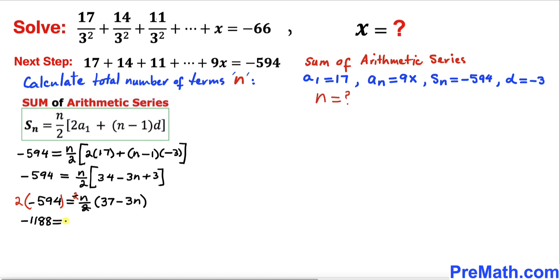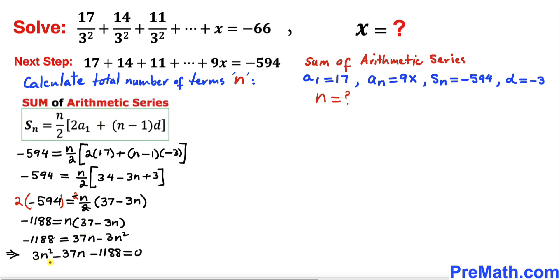The 2s cancel, and we have negative 1188 equals n times (37 minus 3n). Distributing gives us negative 1188 equals 37n minus 3n squared. Moving everything to the left hand side, we get 3n squared minus 37n minus 1188 equals 0. This is our quadratic equation.